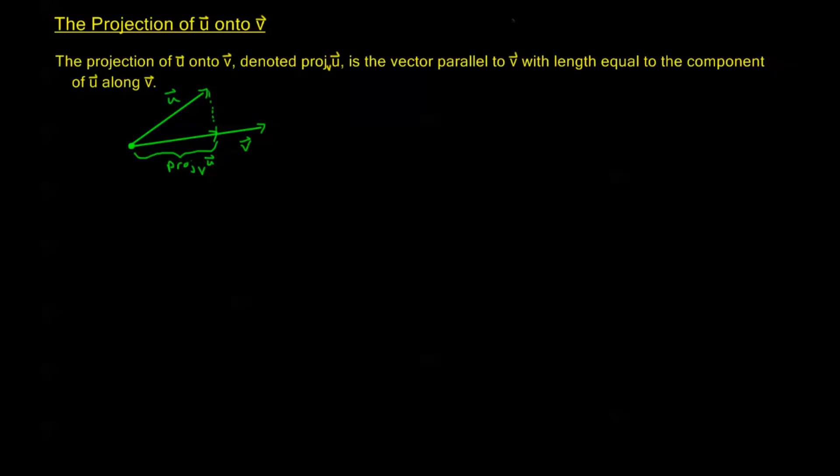Now to calculate this projection, note that the projection of u along v is equal to the component of u along v times the unit vector in the direction of v. Remember we know that the component of u along v we can calculate as u·v divided by the magnitude of the vector v. We saw this in the last video.